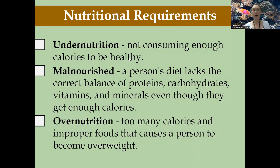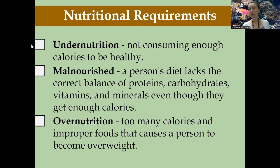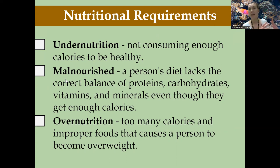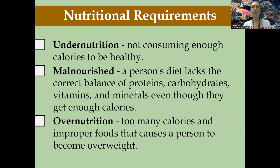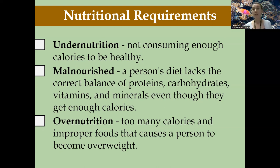The first thing we want to talk about is nutritional requirements. Since we're talking about food production, we want to know the basis of what our aims are. Individuals, depending on their diet, can fall into three different categories: properly nourished, under-nourished — meaning not consuming enough calories to be healthy — or malnourished, meaning they receive enough calories but not the right balance, perhaps lacking access to meat and proteins or iron, causing anemia. On the flip side, over-nutrition means receiving too many calories and improper foods, causing a person to become overweight.